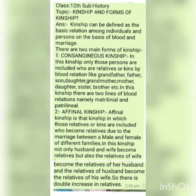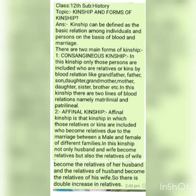Number two is affinal kinship. Affinal kinship is that kinship in which a relation gets created on the basis of marriage between two families. By this marriage, not only the husband and wife become relatives, but all the relatives of the wife become relatives for the husband, and the relatives of the husband become relatives for the wife. So in marriage, there is a double increase in the number of relatives. In affinal kinship we include, for example, mother-in-law, father-in-law, brother-in-law, sister-in-law, daughter-in-law, and all other relatives from the husband's side and the wife's side. This is what we call affinal kinship.